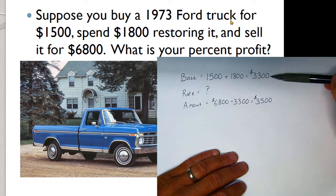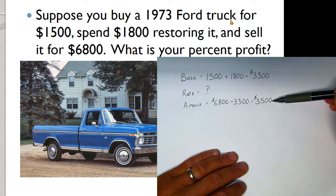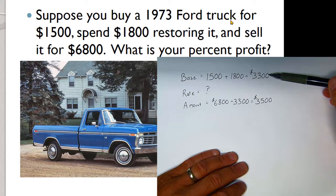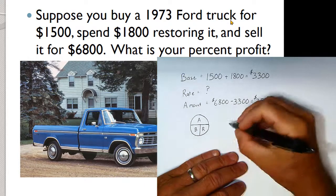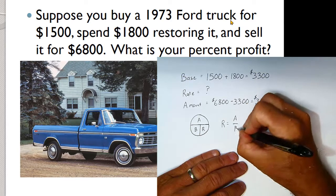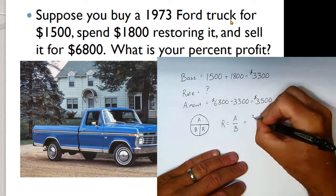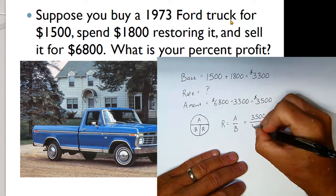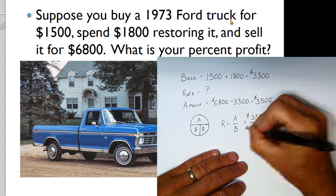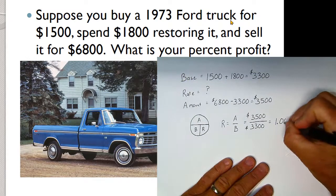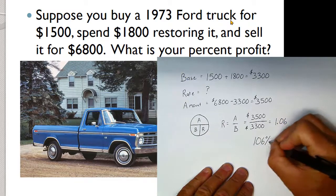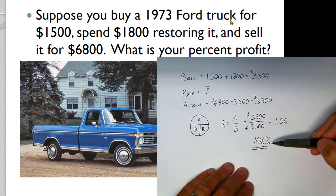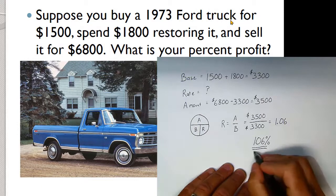We spent $3,300 and made $3,500, so we should get a rate slightly over 100% — since 100% profit means doubling your money. Using rate = amount ÷ base: $3,500 ÷ $3,300 = 1.06, or 106% profit. We did a little better than doubling our money.